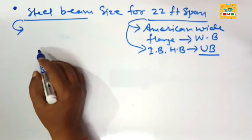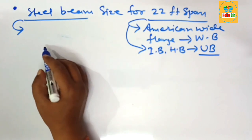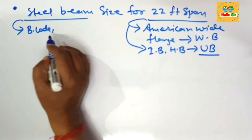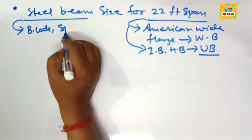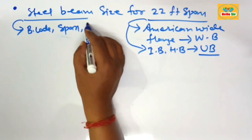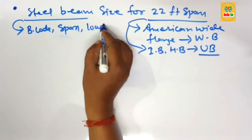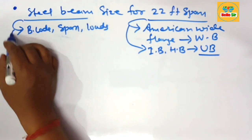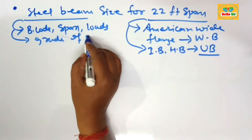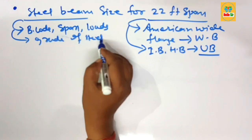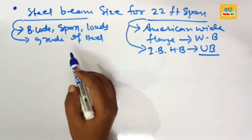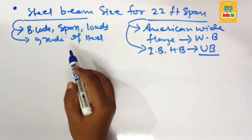The accurate size of a steel beam depends on many factors, like the building code in your area, the span between the supports, the load conditions, and the grade of steel. These are the major factors which decide the accurate size of steel beam required for a specific span.